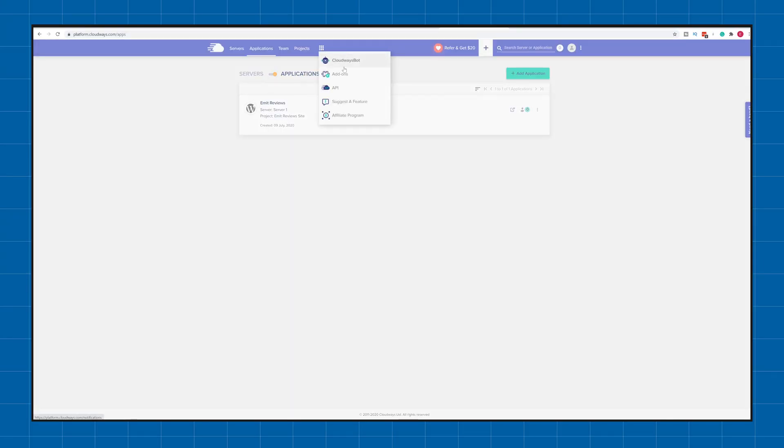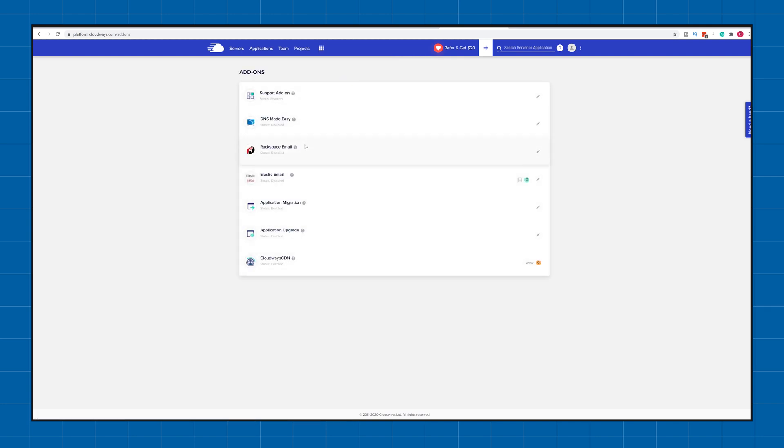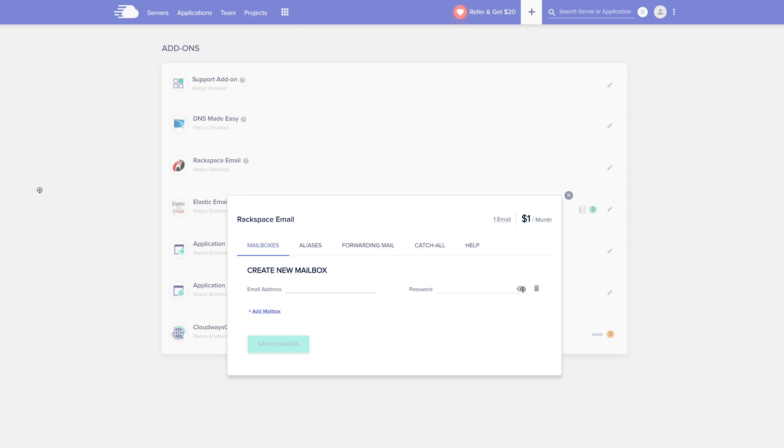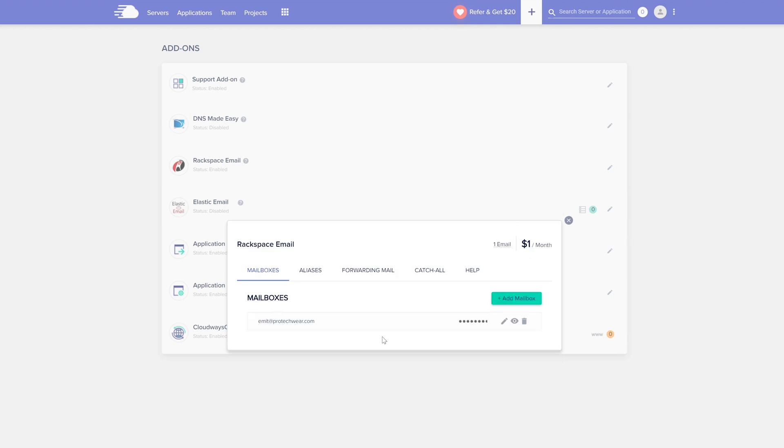And one crucial feature that often gets overlooked when you're managing a business is the email addresses. Cloudways allows you to create professional email addresses. For example I've created Emmet at ProTechwear.com for my business. You can create unlimited email accounts but you will have to pay around $1 per month for each email box that you plan to add. You can then check your email box by accessing it through the webmail client but if you don't want to have an additional email box where you need to go and check everything manually you can actually link that with your generic Gmail account and have everything in one place. I have a tutorial on how you can do that yourself right here.